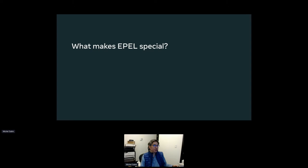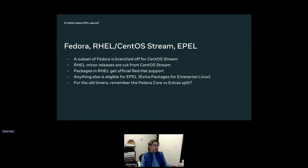So what makes EPEL special? You have Fedora on one end, Red Hat Enterprise Linux and CentOS Stream on the other, and then you have EPEL. Since Stream launched, at certain points in time Fedora is branched off for CentOS Stream. Not all packages get branched — only the packages that Red Hat wants to support. In fact, a lot of the packages that get branched off for Stream end up being retired later if Red Hat decides they don't need or want to support that package in production.